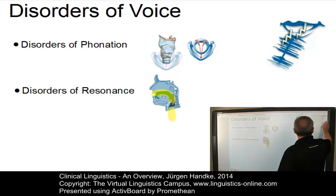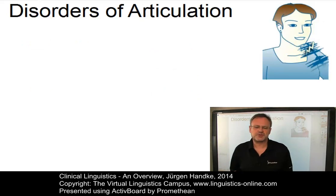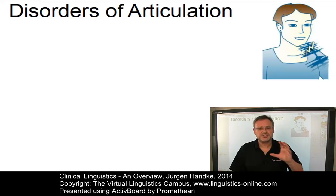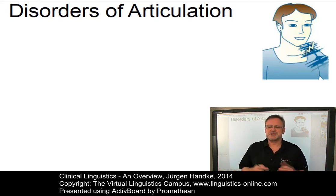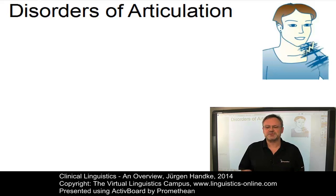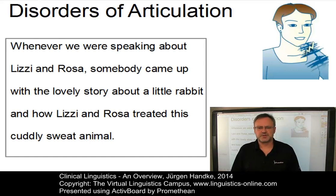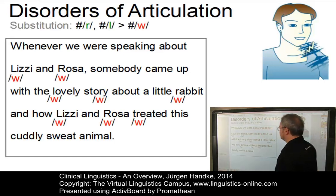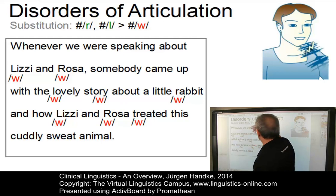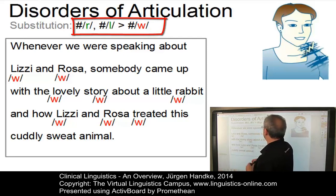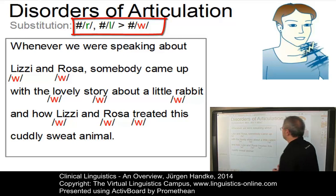Finally, disorders of articulation constitute the most numerous of all speech disorders and this is the traditional centre of the speech pathologist's inquiry. However, the notion of an articulation disorder is a very wide-ranging one and several types of disorder can be distinguished. One example can be referred to as substitution, where certain phonemes with their allophones are replaced by others. For instance, the alveolar approximant /r/ and the alveolar lateral consonant /l/ are replaced by a labiovelar approximant /w/.